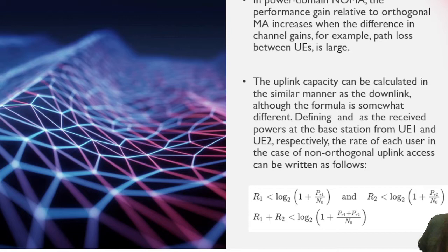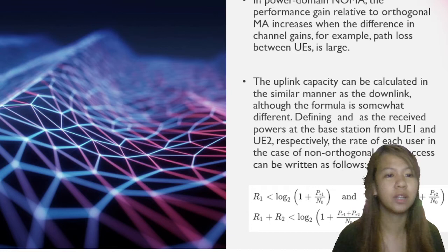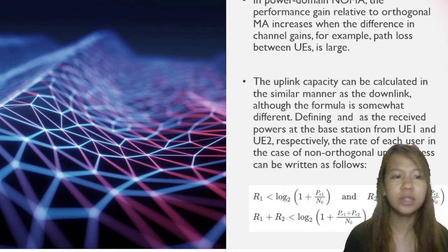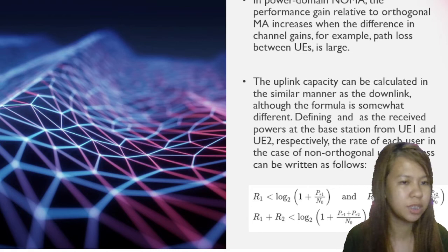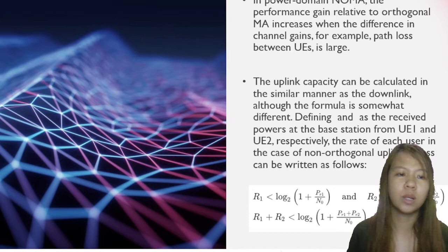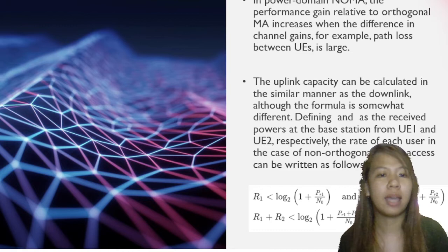In short, multi-player NOMA can be viewed as a variation of NOMA where the users in the network are divided into multiple groups. The users in each group are served in the same orthogonal resource block following the NOMA principles, and different groups are allocated different orthogonal resource blocks. In one resource block, there are two users — that is the use of NOMA.